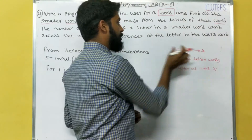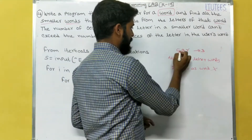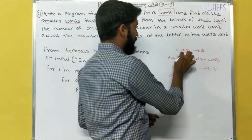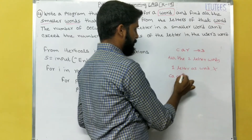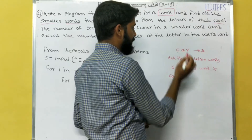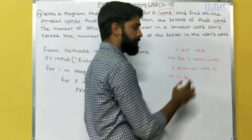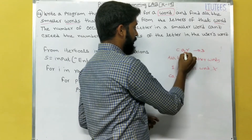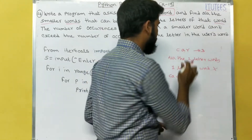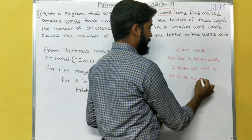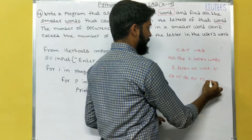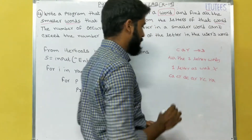That means what are the combinations for 'car'? The first combination is C, A. The second combination is C, R. The third combination is A, C. The fourth combination is A, R. The fifth combination is R, C. The sixth combination is R, A.